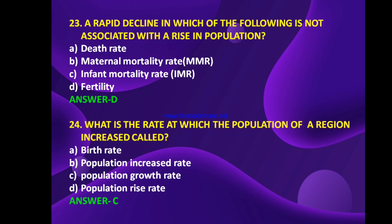A rapid decline in which of the following is not associated with a rise in population — death rate, maternal mortality rate (MMR), infant mortality rate (IMR), or fertility? The answer is D — fertility. What is the rate at which the population of a region increases called — birth rate, population increased rate, population growth rate, or population rise rate? The answer is C — population growth rate.